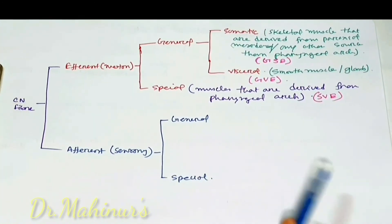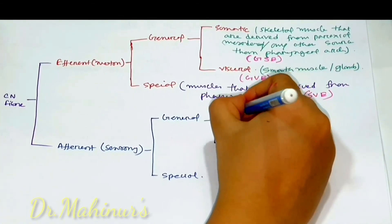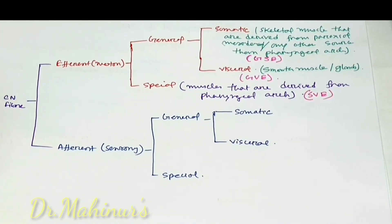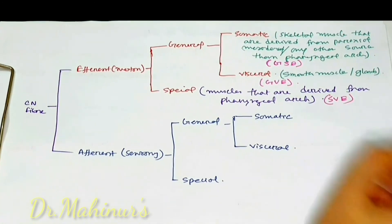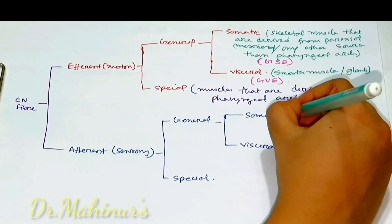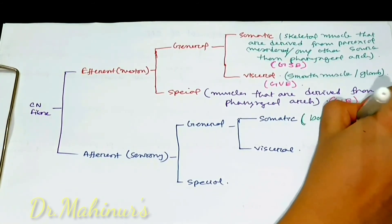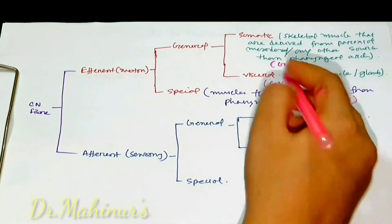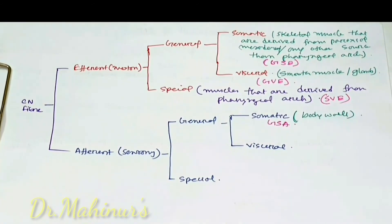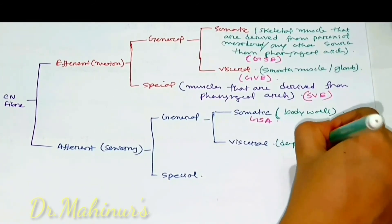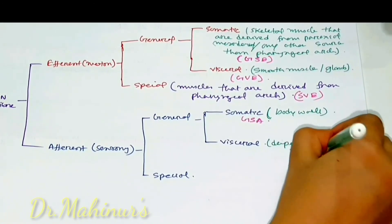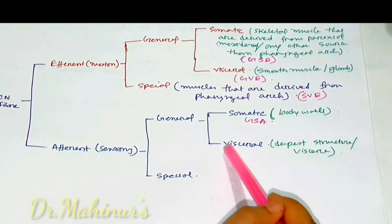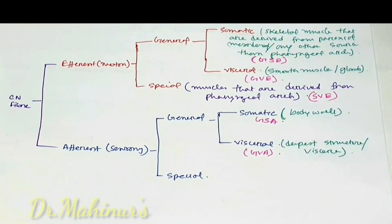For afferent or sensory fibers, they may also have general or special components. Under general, there are somatic and visceral sub-components. Somatic — soma means body wall — when a cranial nerve fiber carries general sensation from the body wall, the functional component is general somatic afferent. Visceral — when the cranial nerve carries sensation from the viscera or deepest structures — the functional component is general visceral afferent.